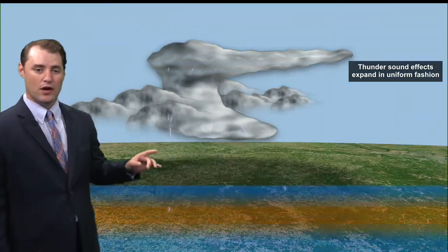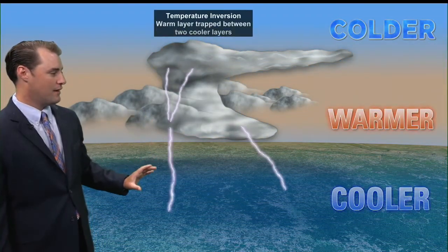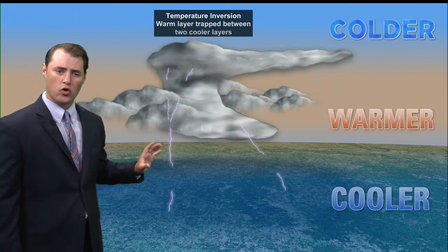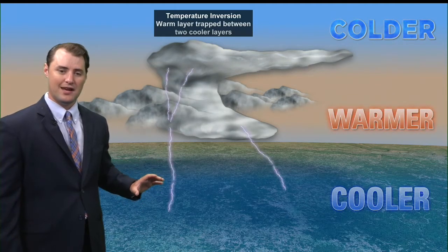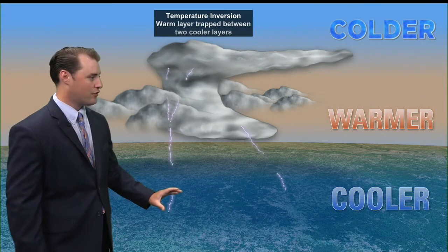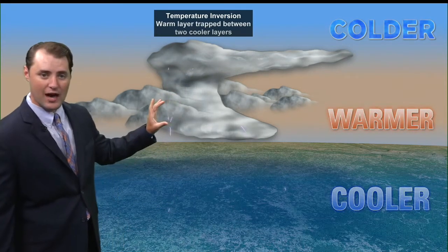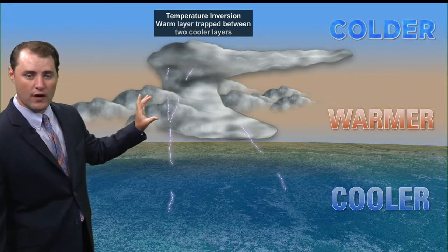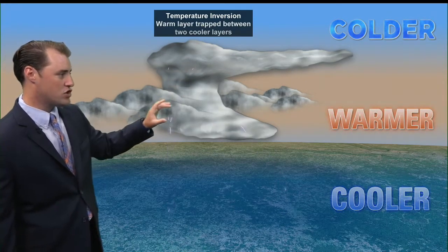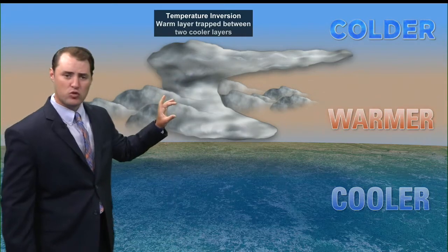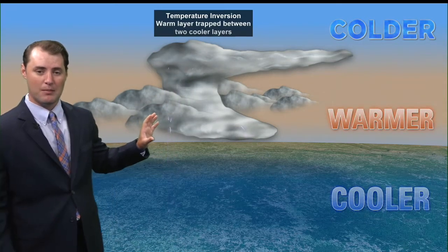But if you take a temperature profile that actually has an inversion — this is typical early on in the mornings — the loss of surface heating leads to a cool layer at the surface, and then some warmer air just above the surface, which leads to the developing thunderstorm, and then colder air above it. So in a temperature inversion, that warm layer is trapped in between two cooler layers, with the same thunderstorm producing the same amount of lightning.